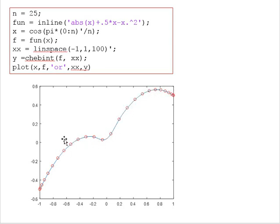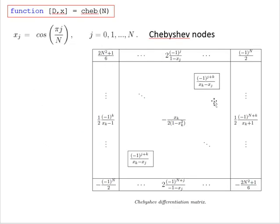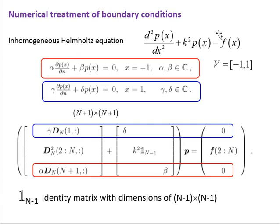In the previous videos we saw how to calculate the Chebyshev differentiation matrix. We use the function cheb(n), putting only the number of points, which gives us X representing the Chebyshev nodes and D the differentiation matrix. The most important thing in solving differential equations is the boundary conditions.